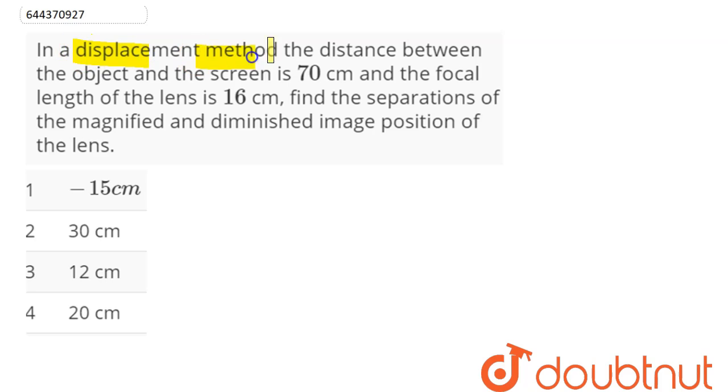Question: In a displacement method, the distance between the object and the screen is 70 centimeters, and the focal length of the lens is 16 centimeters. Find the separations of the magnified and diminished image positions of the lens.